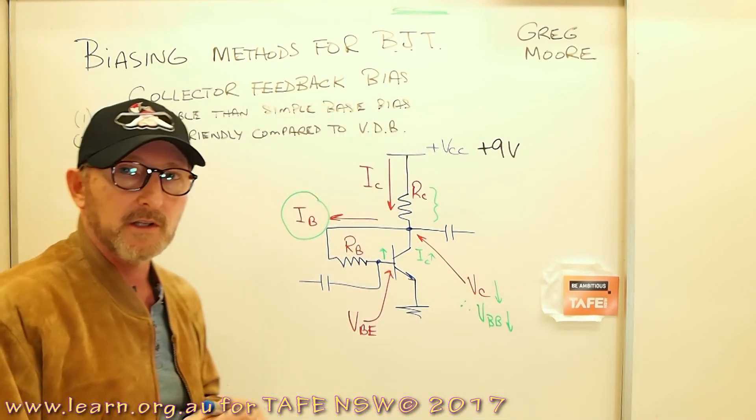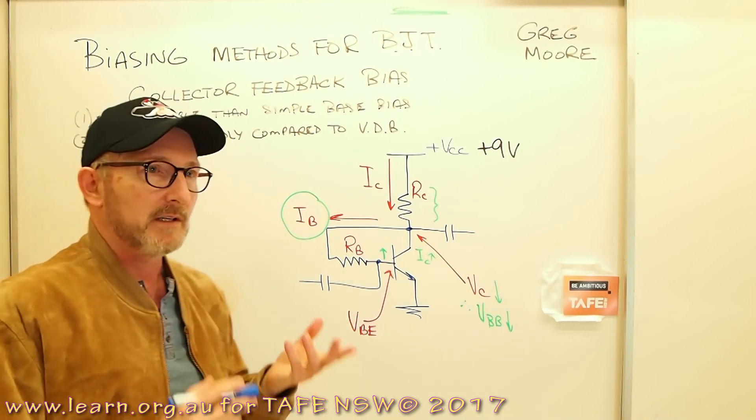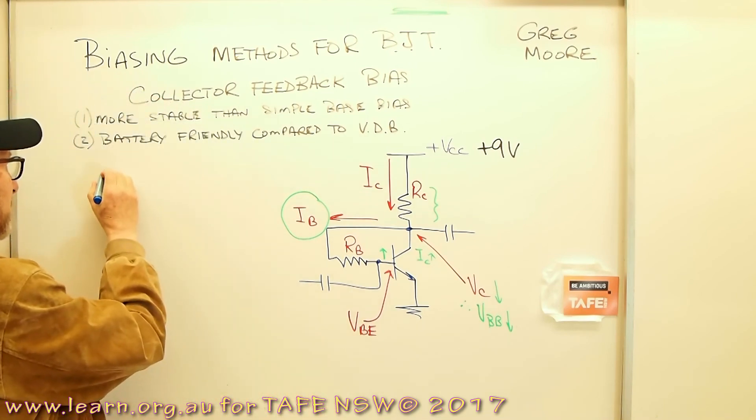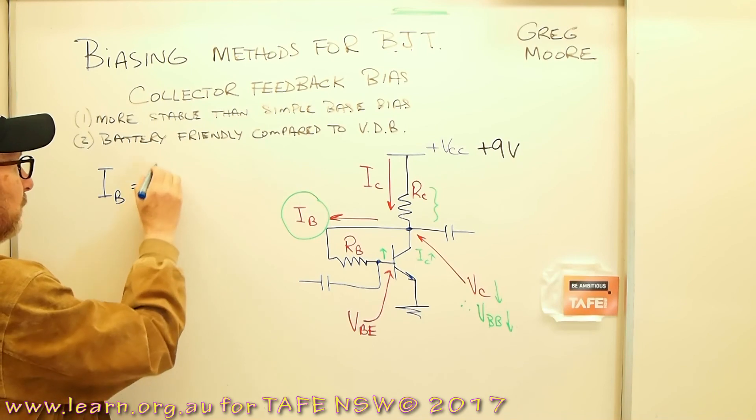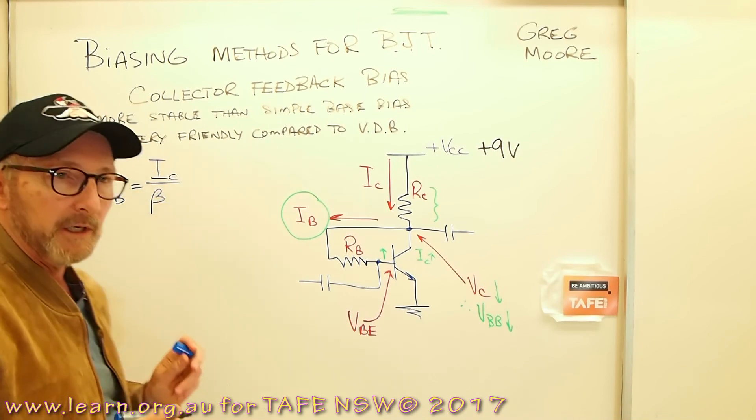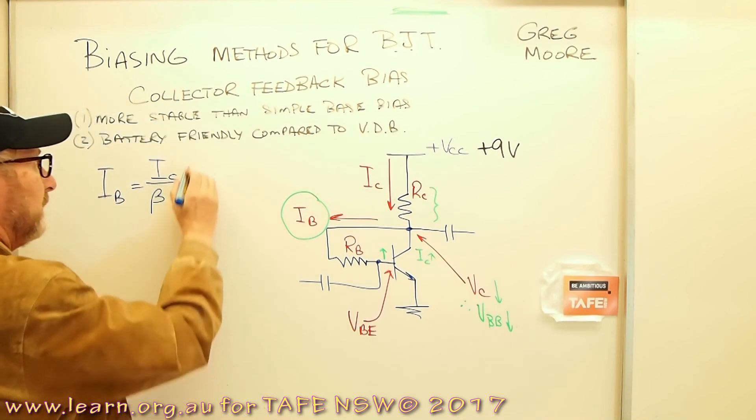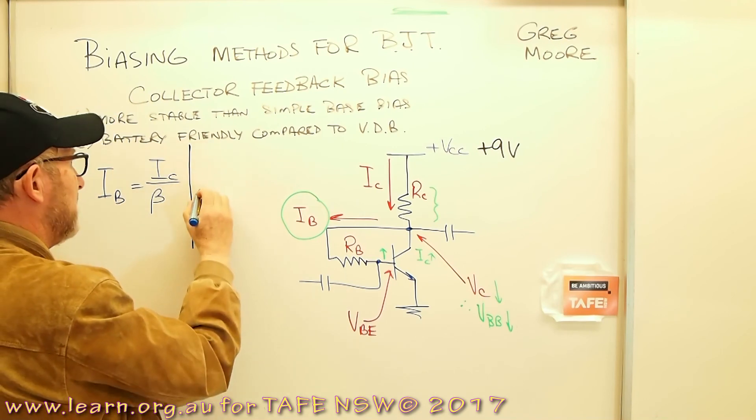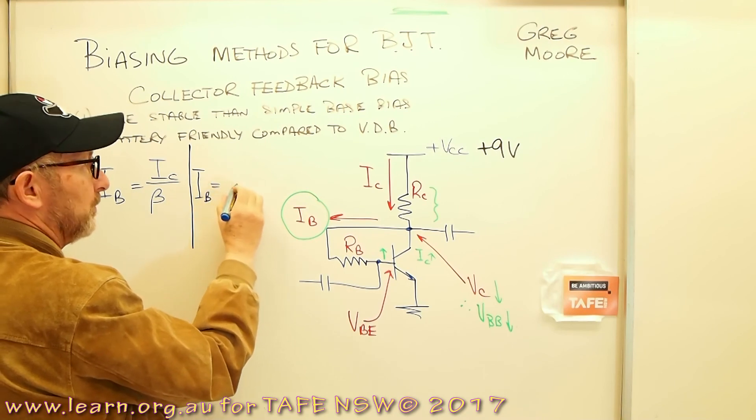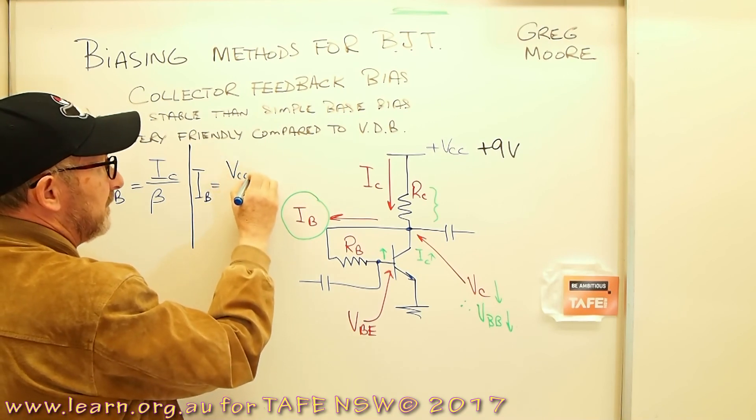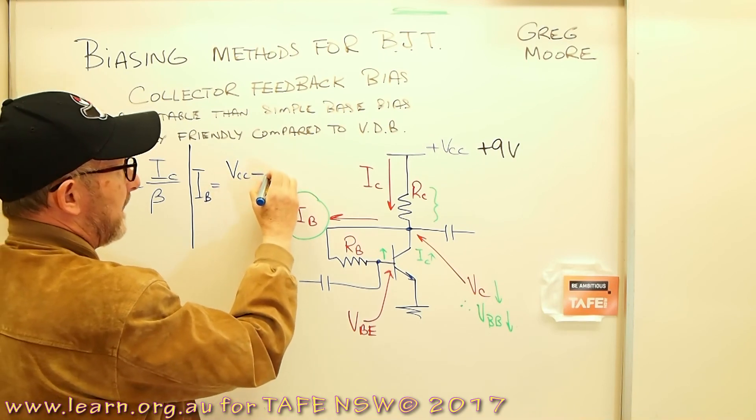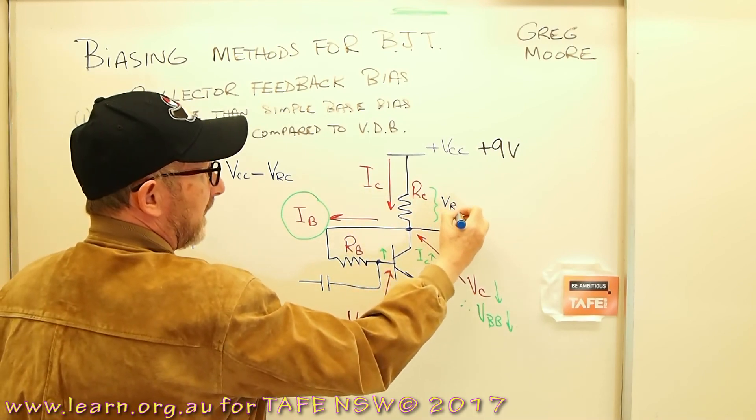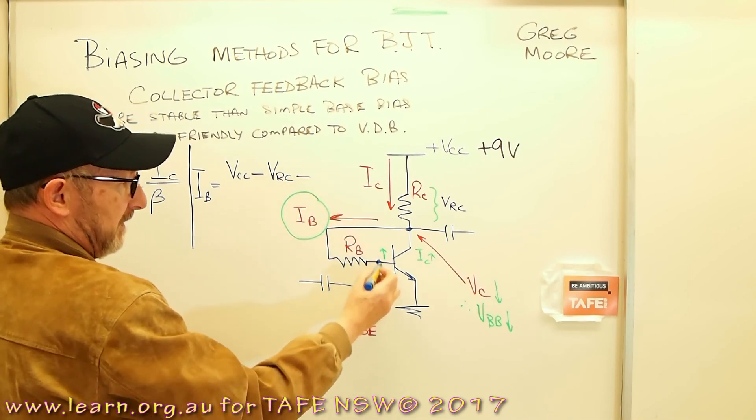With any transistor like this, we know that the base current is going to be a function of beta and IC. So we can say that IB is equal to IC divided by the DC beta. We can also say, case one, case two, we can also say that IB would be equal to VCC minus VRC minus VBE.